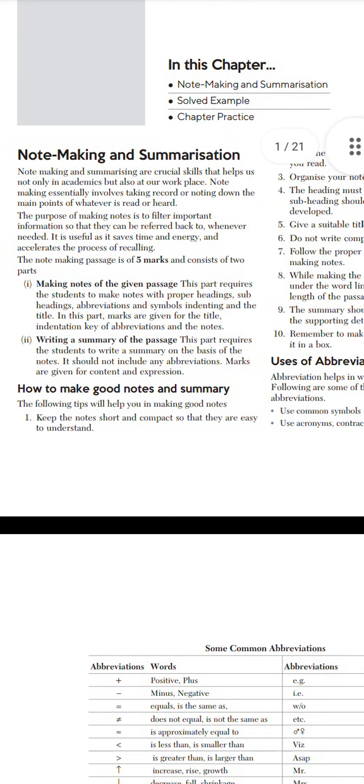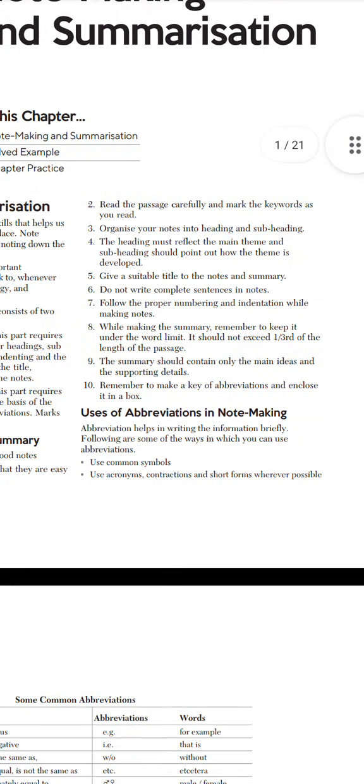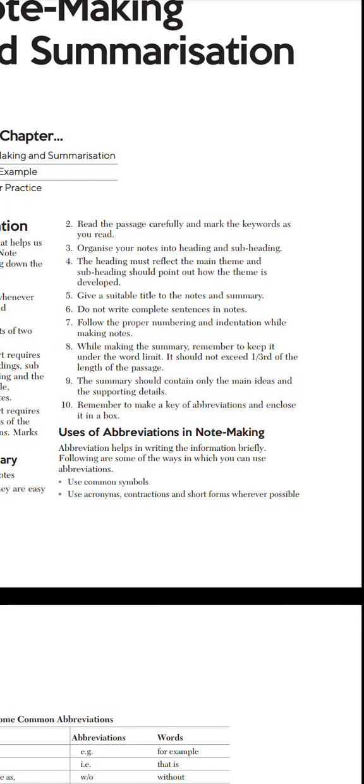Next is how to make good notes and summary. Here are tips which will help you. First, keep the notes short and compact so that they are easy to understand. Second, read the passage carefully and mark the keywords as you read. Third, organize your notes into headings and subheadings. The heading must reflect the main theme and the subheading should point out how the theme is developed.